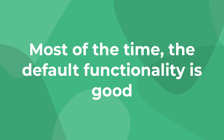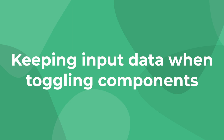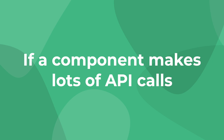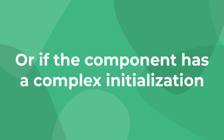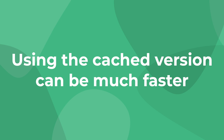So why is Keep Alive useful? In most cases, the built-in functionality for dynamic components works just fine. However, there are certain times where you might want to cache the state — for example, if we're tracking user inputs like forms, if our component is making a lot of API calls and we don't want to call them every single time we change tabs, or if our component takes a while to set up its data and computed properties. In those cases, it makes a lot more sense to use the cached version rather than starting from scratch every time.